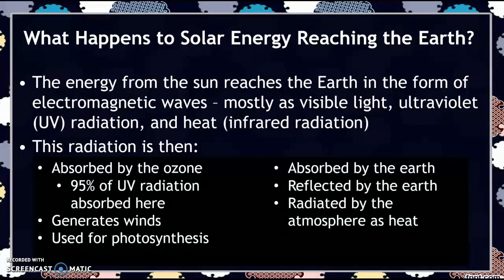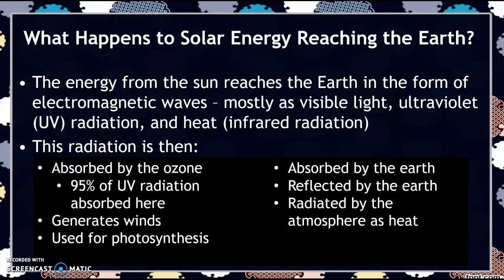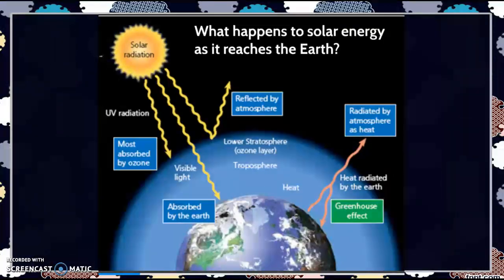So what happens to all the solar energy that reaches the Earth? The energy from the Sun reaches the Earth in the form of electromagnetic waves, composed of visible light, UV or ultraviolet radiation, and heat or infrared radiation. All of this radiation then does one of six things: it's absorbed by the ozone — that O3 absorbs a lot of the UV radiation, preventing things like skin cancer; it can help generate winds; it's used for photosynthesis by plants; it's absorbed by the Earth's surface; it's reflected back by the Earth's surface; or it's radiated by the atmosphere as heat.